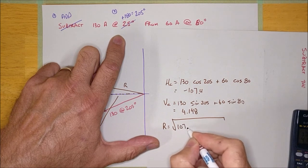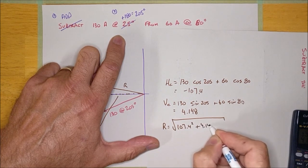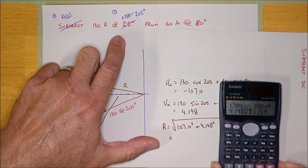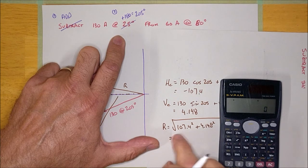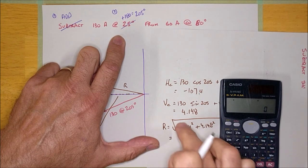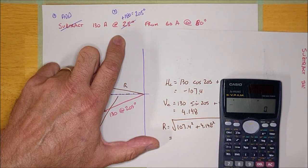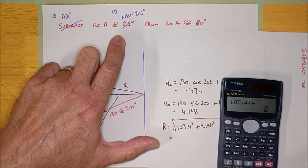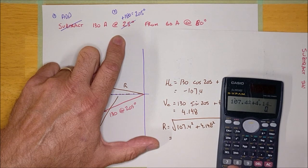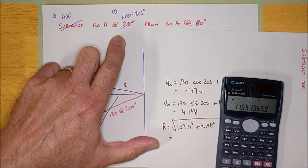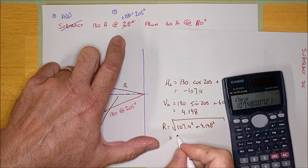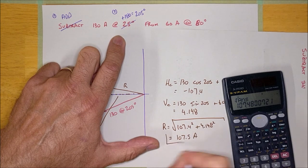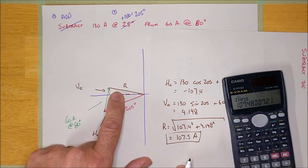The vertical component is 4.148. Now we calculate the resultant magnitude: it's the square root of 107.4 squared plus 4.148 squared. I'm not putting the negative sign in because I'm doing the square root. So: √(107.4² + 4.148²) equals approximately 107.5 amps. That's the resultant — that brown line.